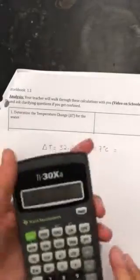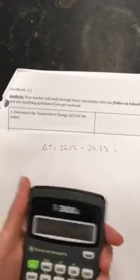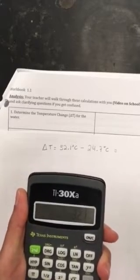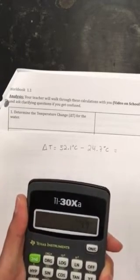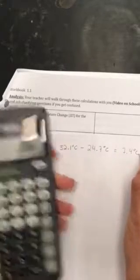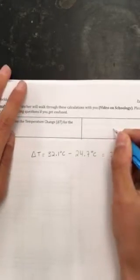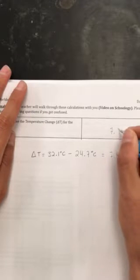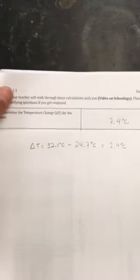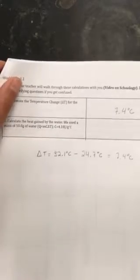This is final minus initial, so I would get 32.1 minus 24.7, which gives me 7.4°C. So that would be the calculation that goes in here. Of course you're going to have to do this for your own data.